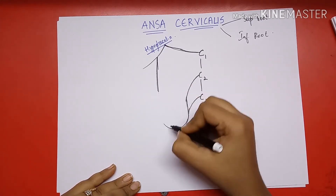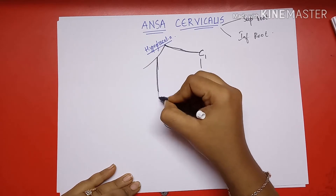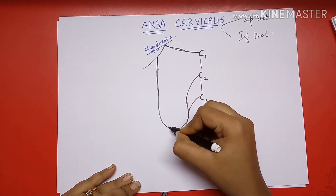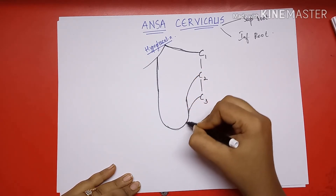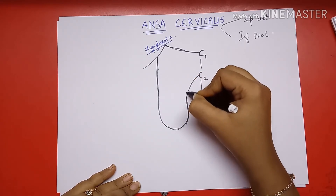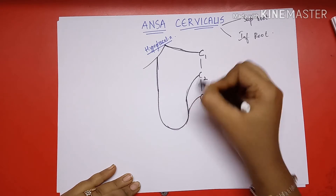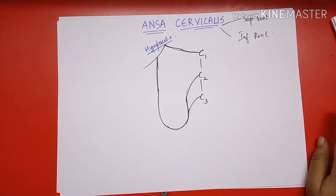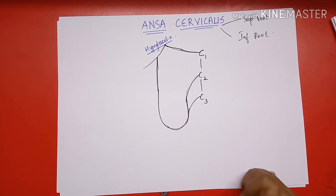This inferior root joins the superior root to form the entire ansa cervicalis. Now that we've learned about the formation of the superior and inferior roots, we'll learn about the distribution, or the branches, of ansa cervicalis.